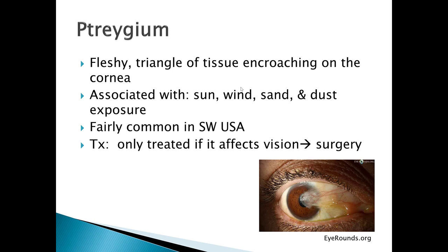A group that you'll see pterygium very commonly in is migrant farm workers who are outside. One of the best things you can do to prevent this is to have them wear sunglasses to protect the eye. If it does develop, the only treatment is surgery, and we reserve surgery until the pterygium actually encroaches on the central visual acuity. As you can see in the picture, the pterygium has crossed over the limbus and the pupil, blocking vision — this would be a surgical condition.